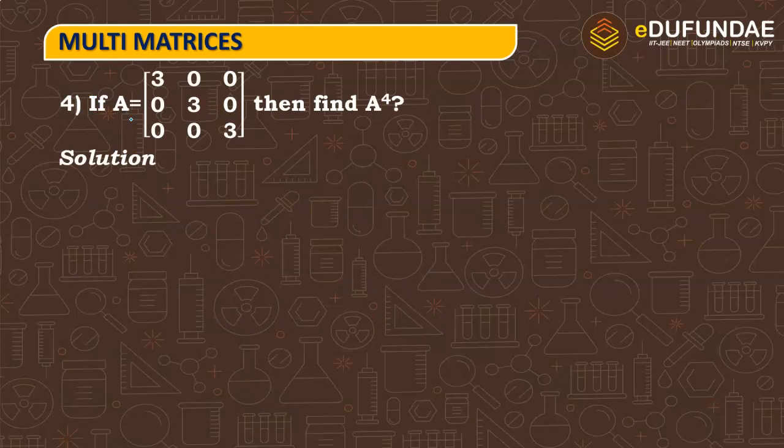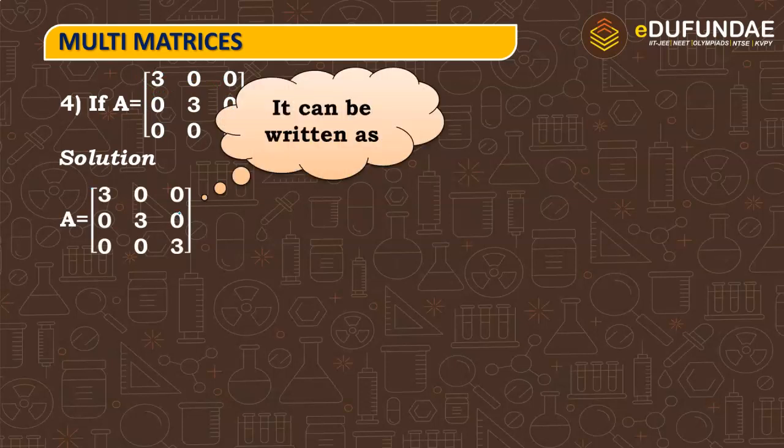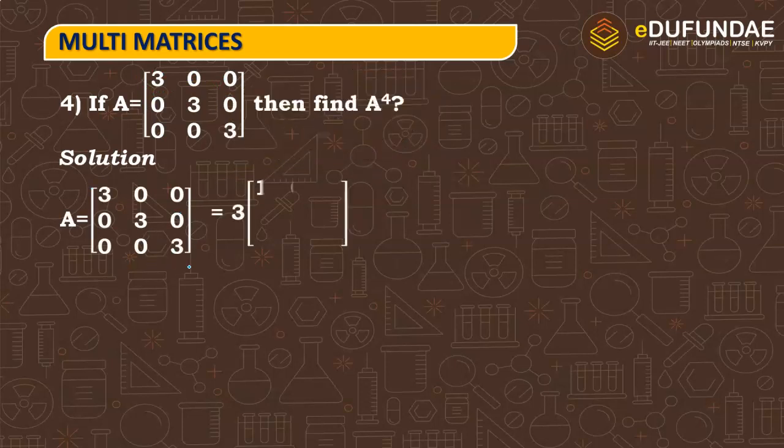Now, next question is, if A is equal to 3 cross 3 matrix is, 3, 0, 0, first row is, 0, 3, 0, 0, 0, 3 is.